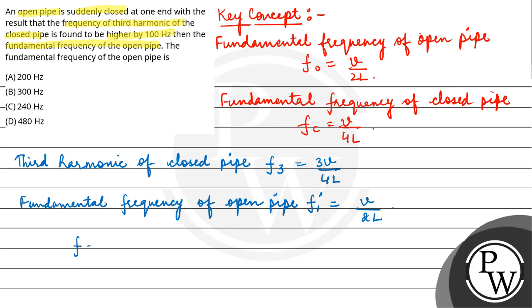F_3 is greater than F_1 dash by 100 Hertz. So that means 3V by 4L minus V by 2L equals 100.